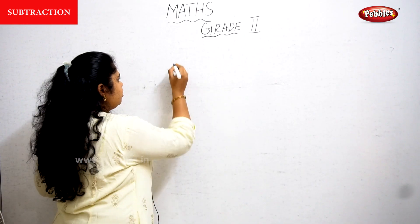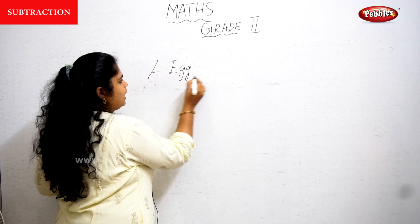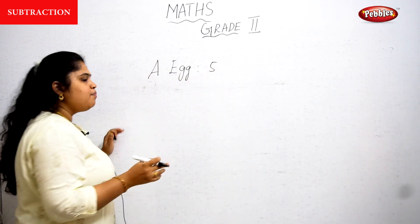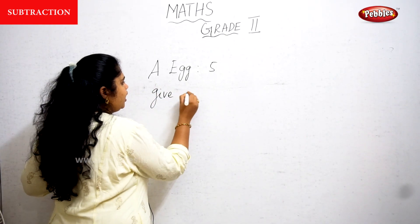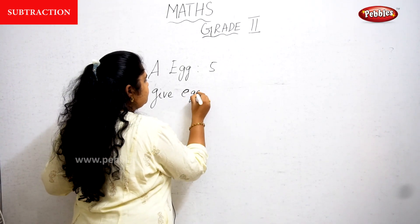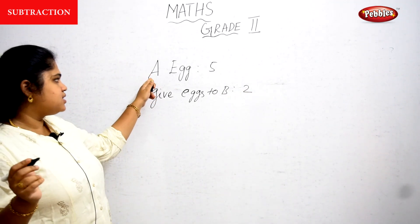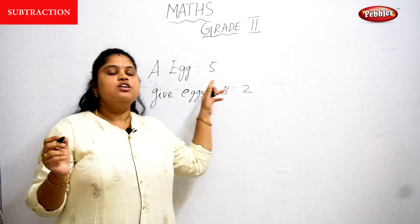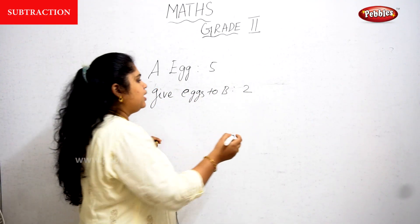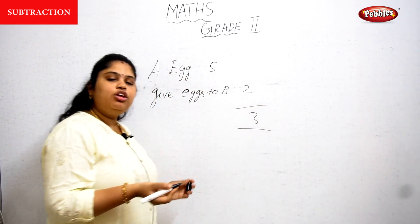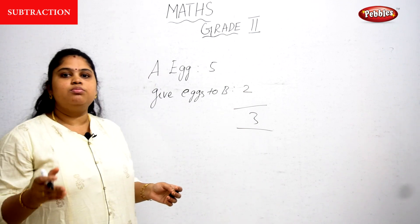For example, A has five eggs. A gives two eggs to B. So how many eggs remain? In five eggs, A gave two eggs to B, so the remaining balance will be three. That is the answer.